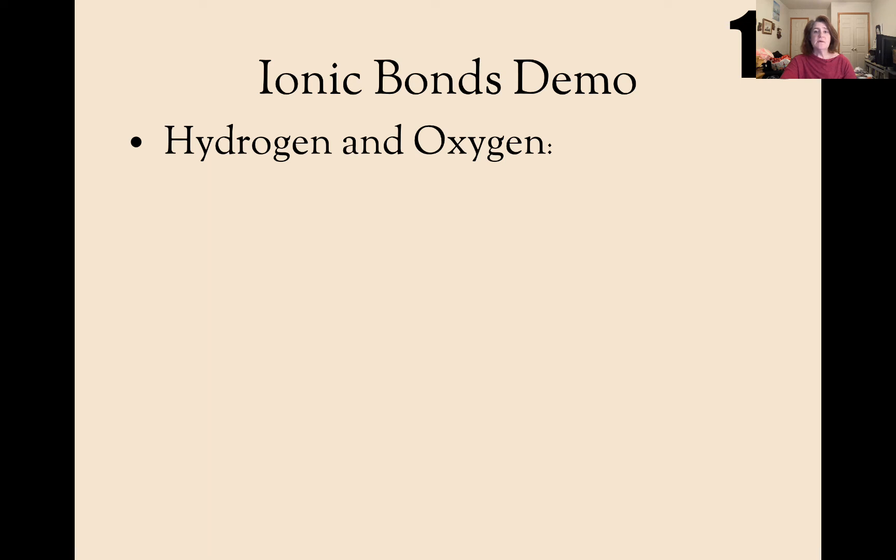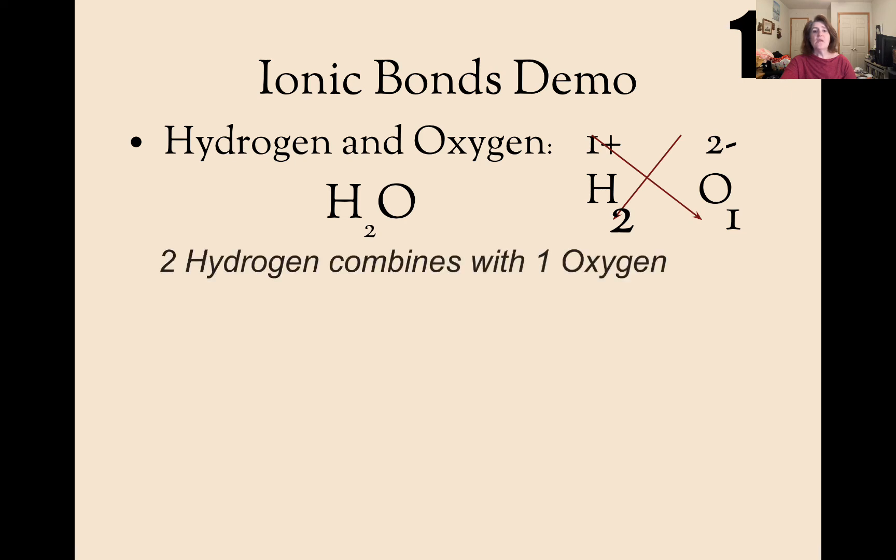Hydrogen and oxygen, however. Hydrogen has an oxidation of one positive. Oxygen has an oxidation of two negative. So in this ionic, they have to crisscross. The two from oxygen comes down to be with hydrogen. The one from hydrogen comes down to be with oxygen. And you're left with H2O. Two hydrogen atoms must be used to combine with one oxygen.